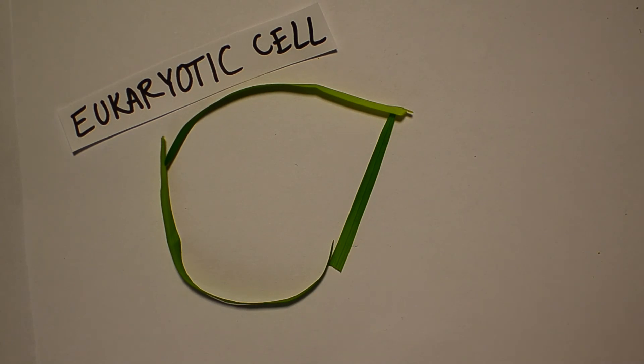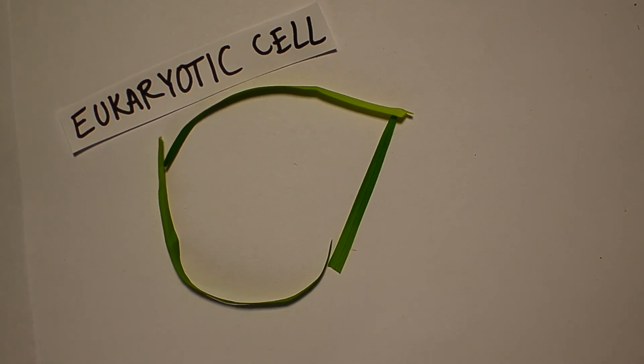One of the key features of eukaryotic cells is the nucleus. This is where DNA transcription takes place. Surely DNA must be smaller than the nucleus in order to fit inside of it, right?